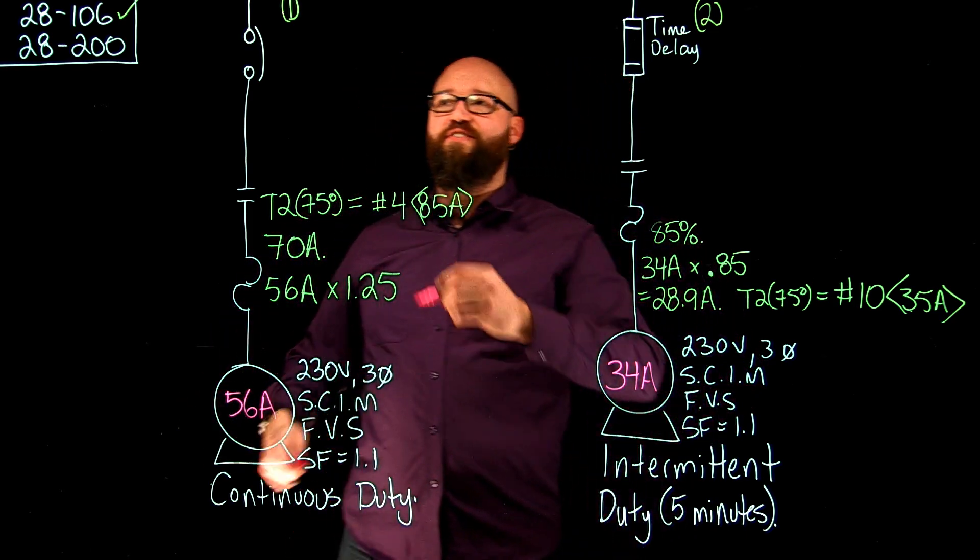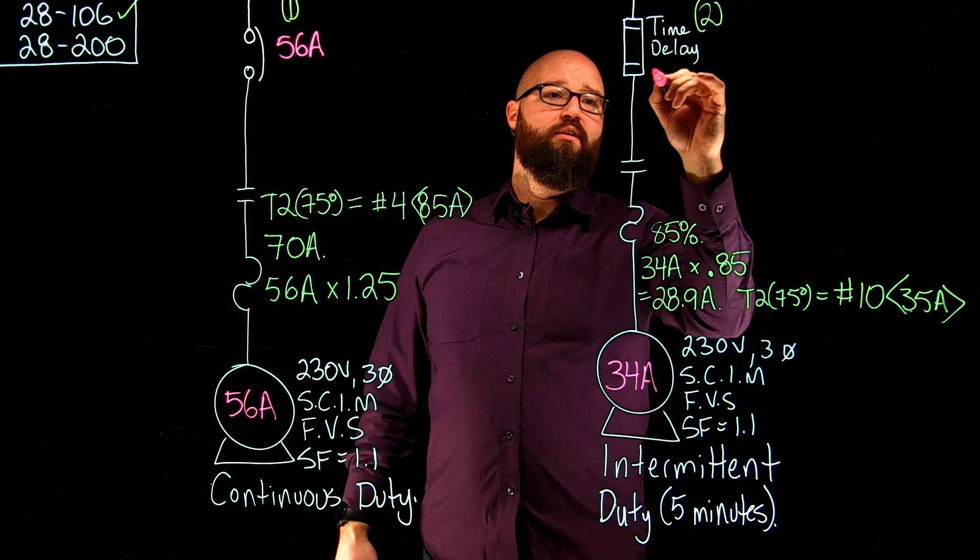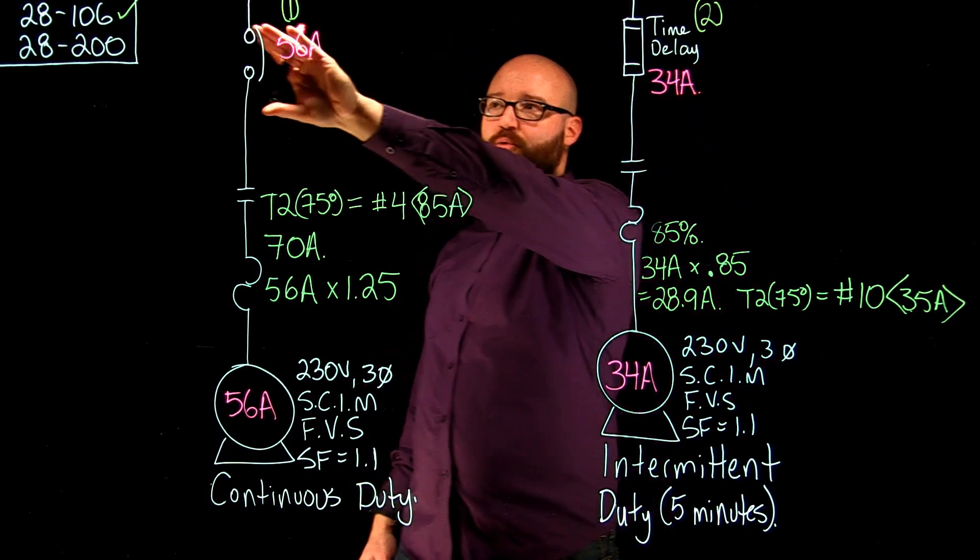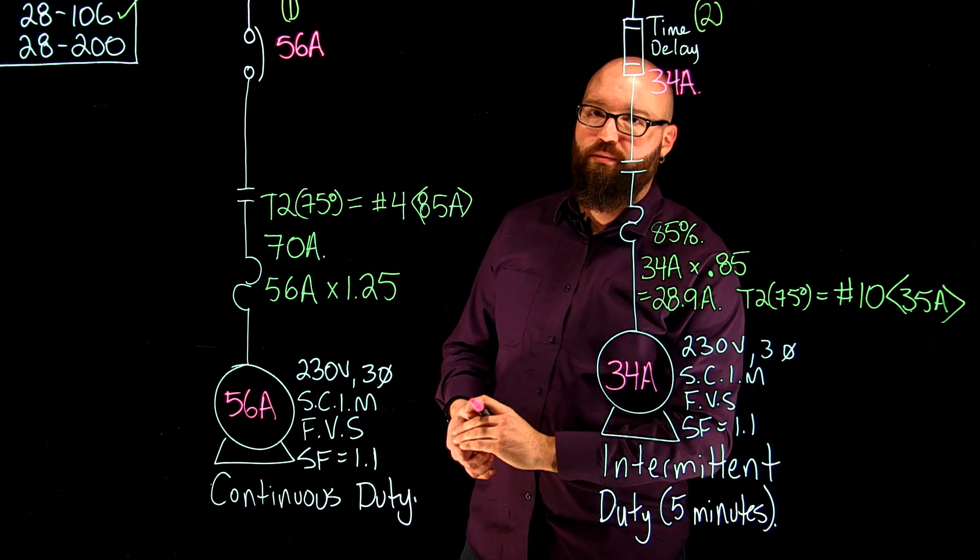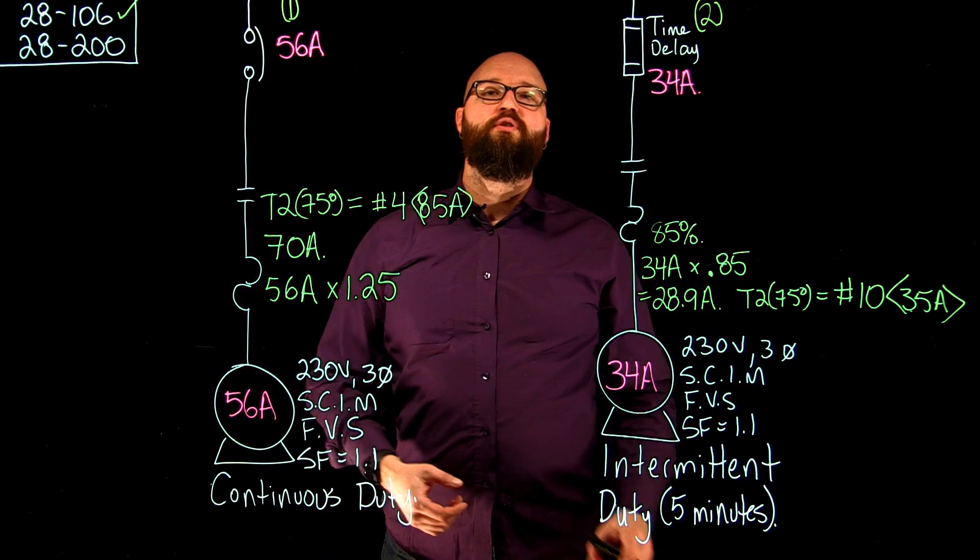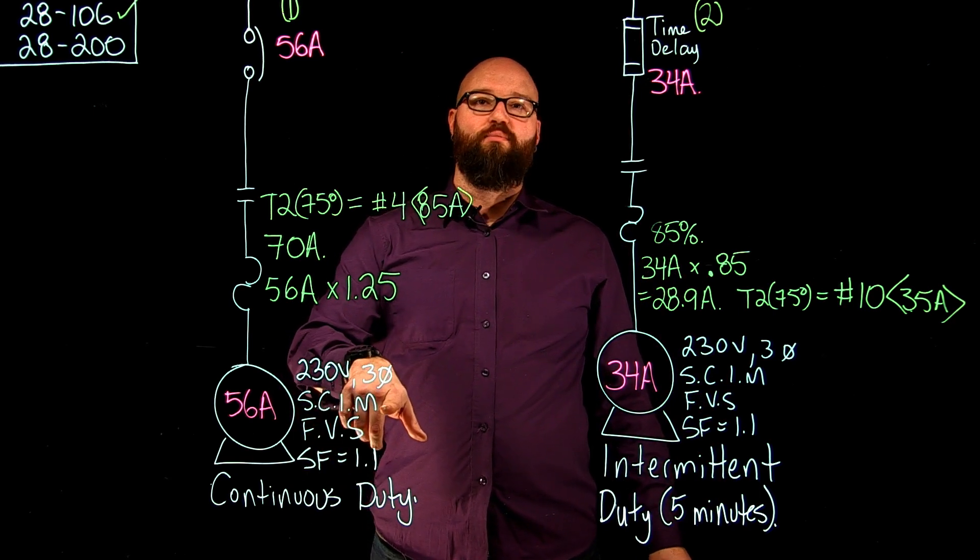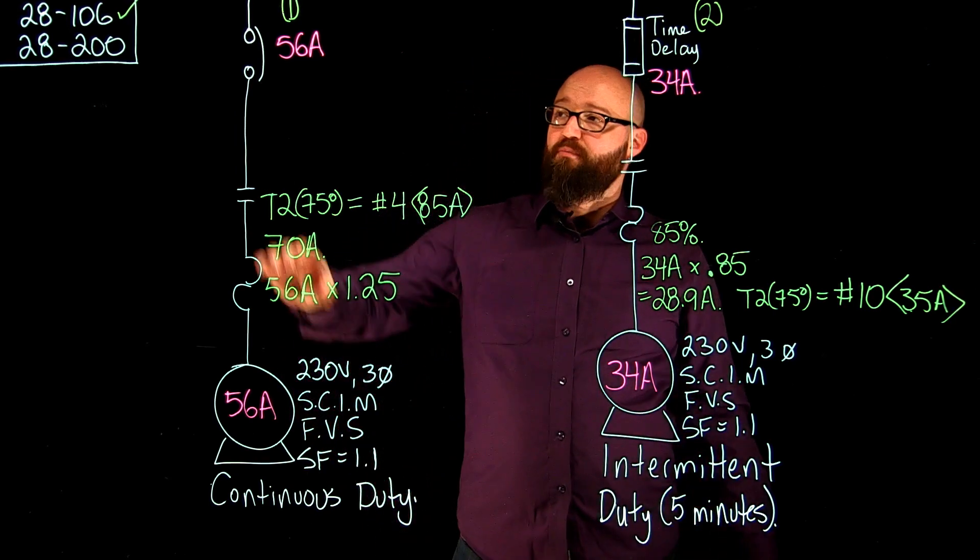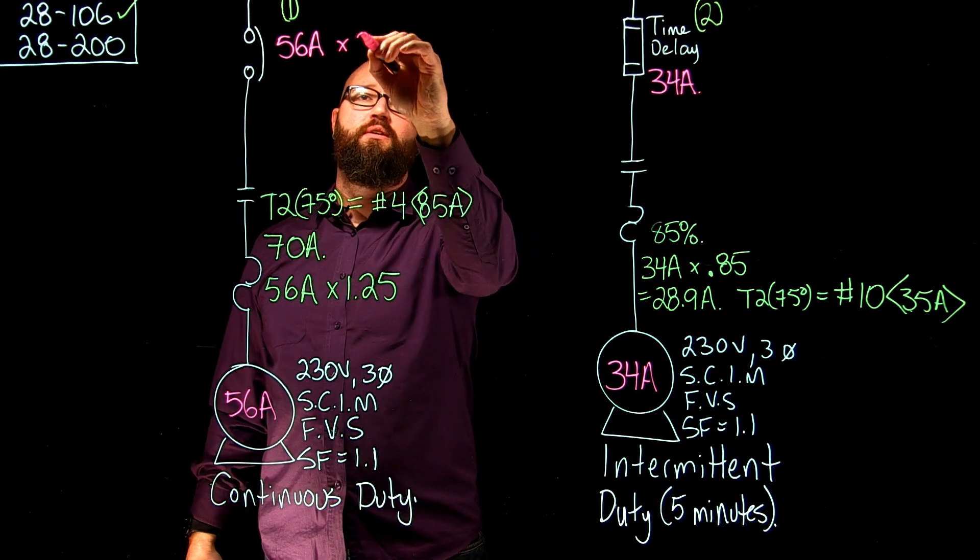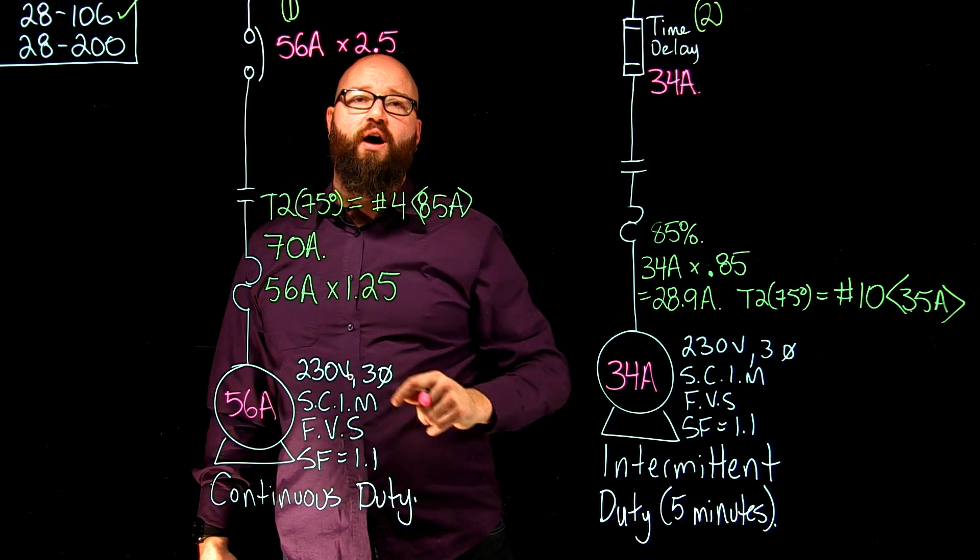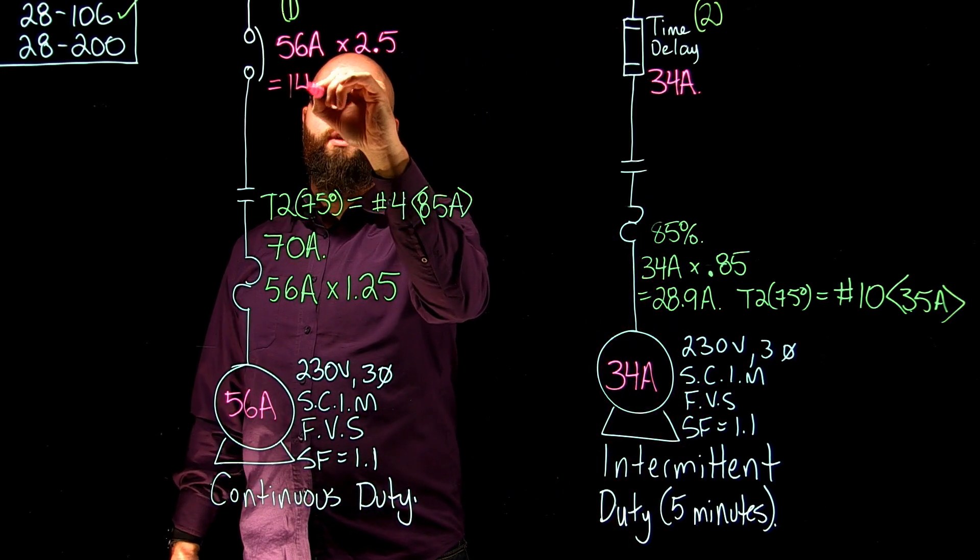So we're going to start with our FLA of 56 amps, because 56 amps, our FLA is always our magic number for our motor calculations. Over here, we have our 34 amps. Notice I've got a breaker drawn for this branch, and over here I have a fuse drawn, and I've indicated that it's a time delay fuse. That's important when we go to table 29. So, for our continuous duty motor here with our 56 amps, when we go to table 29, what we'll see is if we look at our three-phase squirrel cage induction motor with full voltage start and protection with a breaker, it's going to tell me that my multiplier is 250%. So we're going to take that 56 amps and multiply it by 2.5 or 250%. That's going to give me a maximum calculated value in this case of 140 amps.